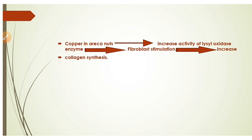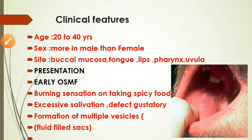Regarding the clinical features of OSMF, it mostly occurs at the age of 20 to 40 years, as people in this group are most involved in areca nut chewing. It is more common in males than females. The site of occurrence is mostly the buccal mucosa (cheek area), and also the tongue, lips, palate, and uvula. OSMF has two stages: early stage and advanced stage.